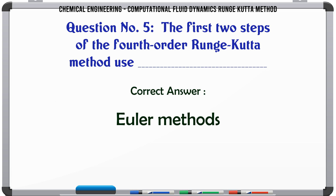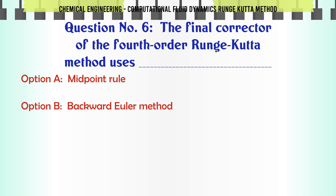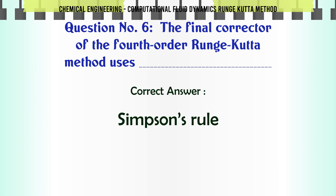The final corrector of the 4th order Runge-Kutta method uses: A: midpoint rule. B: backward Euler method. C: Simpson's rule. D: trapezoidal rule. The correct answer is: Simpson's rule.